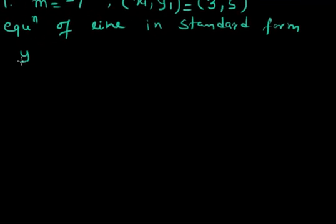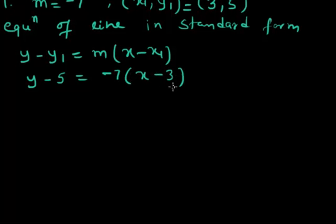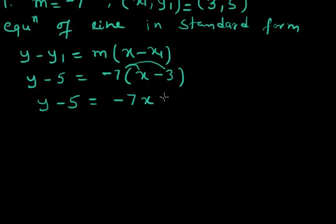The point-slope form says the equation is given by y minus y1 equals m times x minus x1. x1 y1 is given as 3 and 5, so I'll substitute x1 equals 3, y1 equals 5, and m equals minus 7. So y minus 5 equals minus 7 times x minus 3. Applying the distributive property: minus 7 times minus 3 gives plus 21.